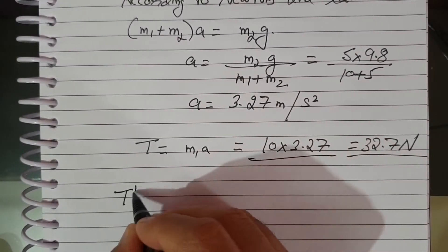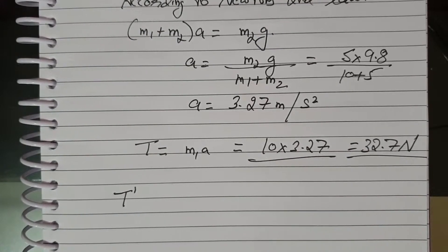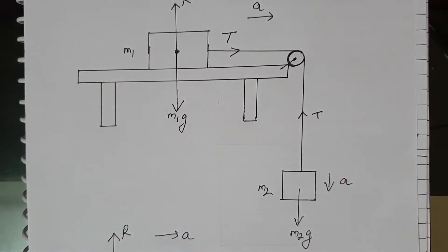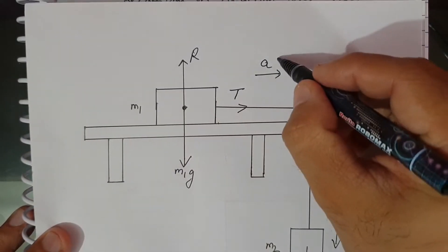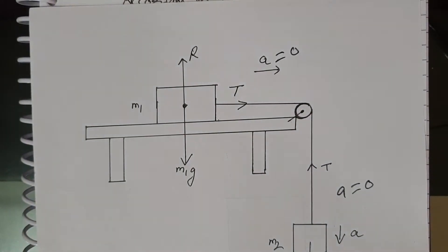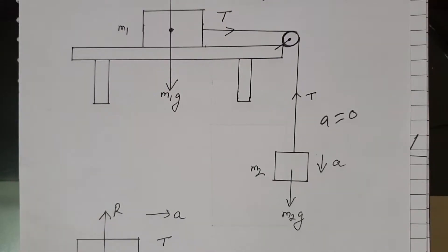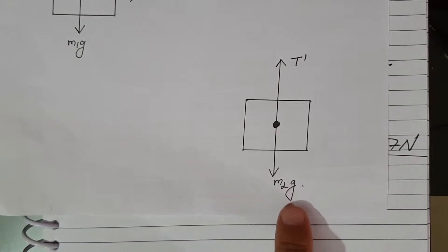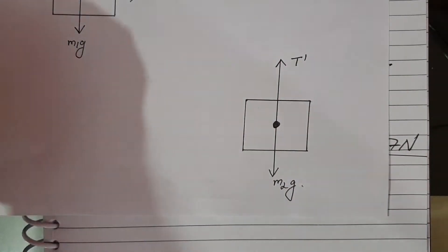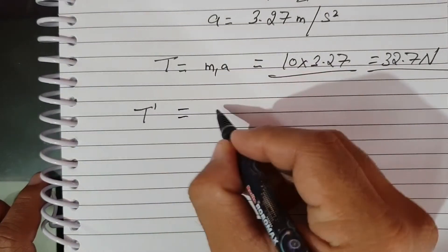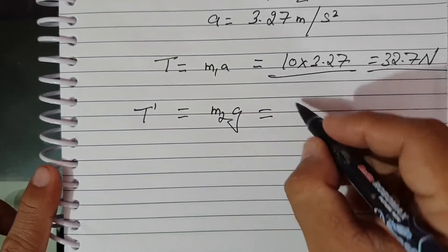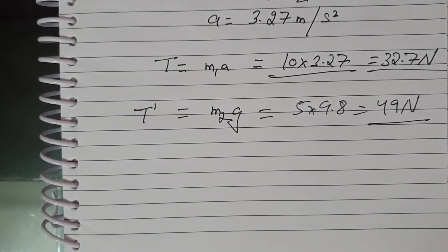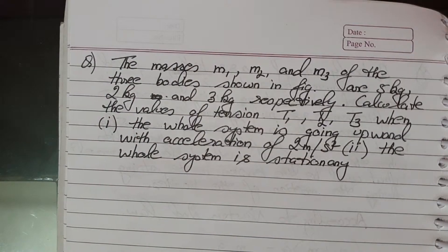When the body stops, let the tension be T-dash. At rest, acceleration is zero, so the net force on each body is zero. From the free body diagram of M2: T-dash = M2G = 5 × 9.8 = 49 N. This is the tension when the bodies are at rest.